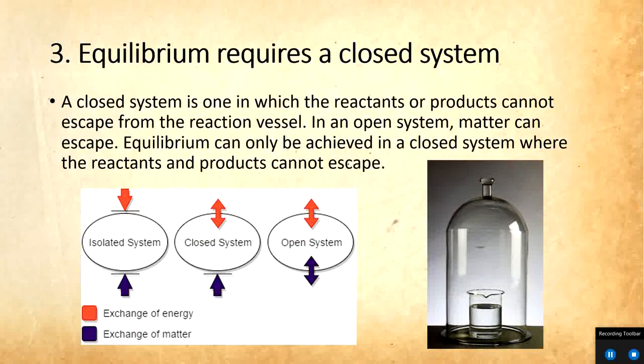So the third factor for equilibrium is that equilibrium requires a closed system. If you remember, a closed system is one where the reactants or products cannot escape from the reaction vessel. Energy can be transferred back and forth, but matter cannot. In an open system, matter can get out. So for equilibrium, we have to be in a closed system, because if we're losing matter, that disrupts the balance of our equilibrium.